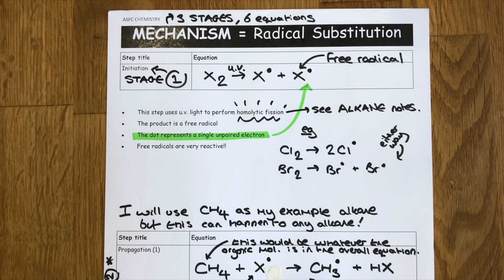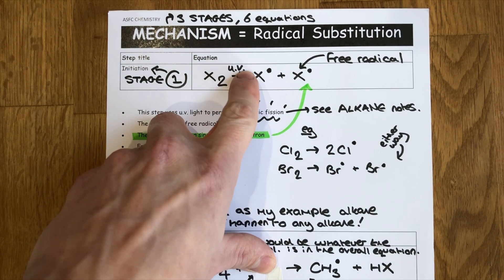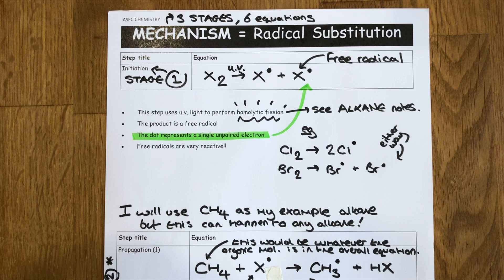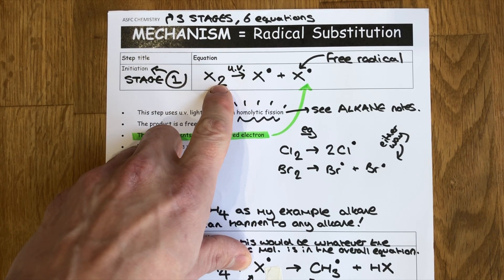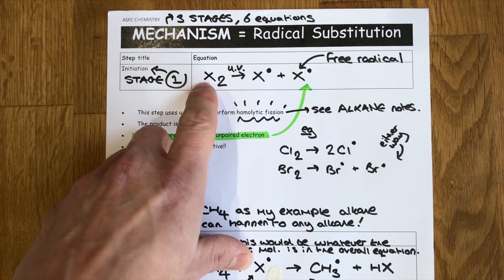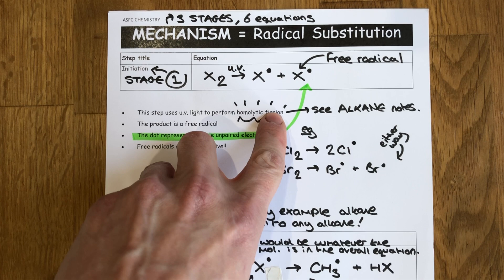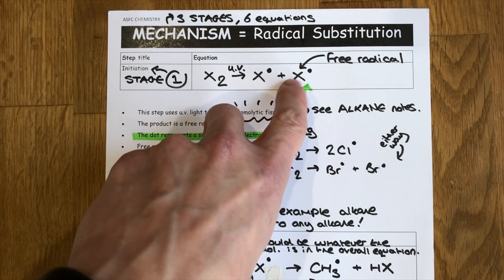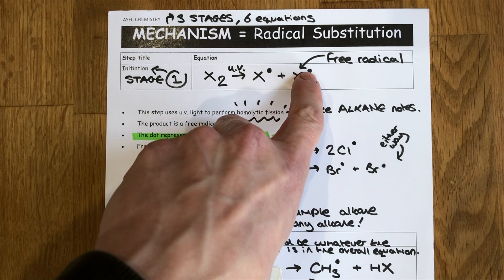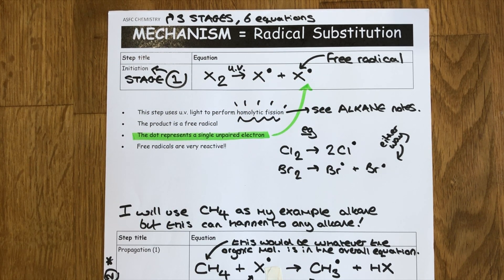Let's have a closer look at this first stage of the radical substitution mechanism which is called initiation. Initiation utilizes the UV light that I mentioned was an essential condition. The UV light is necessary because it starts off initiation causing for homolytic fission of the bond between the two halogens in the X2. For example if I have Cl2 the UV light causes homolytic fission to take place to create these two free radicals. We know these are free radicals because they have a dot shown next to them representing a single unpaired electron.